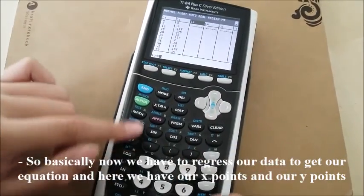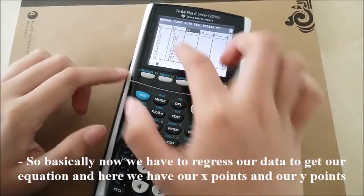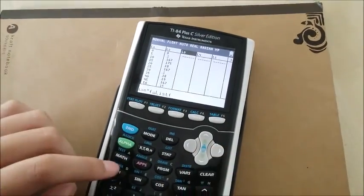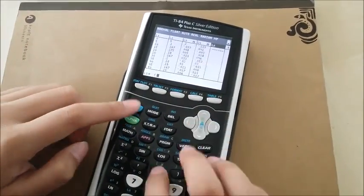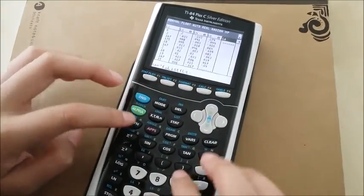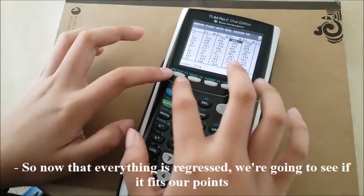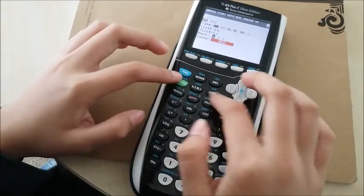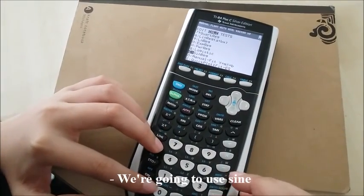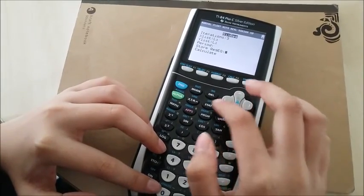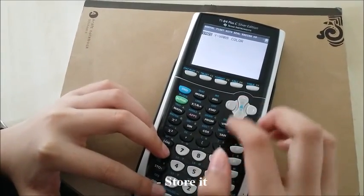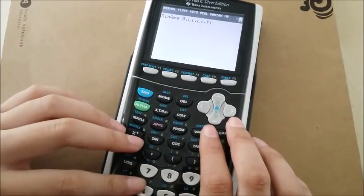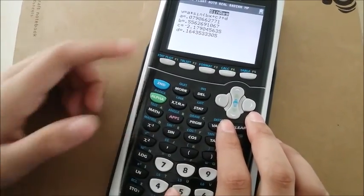So basically now we have to regress it to get the, here we have our x points and our y points. So now that everything is regressed, we're going to see if it fits our points. We're going to use signs. We're going to use store. And this is our values.